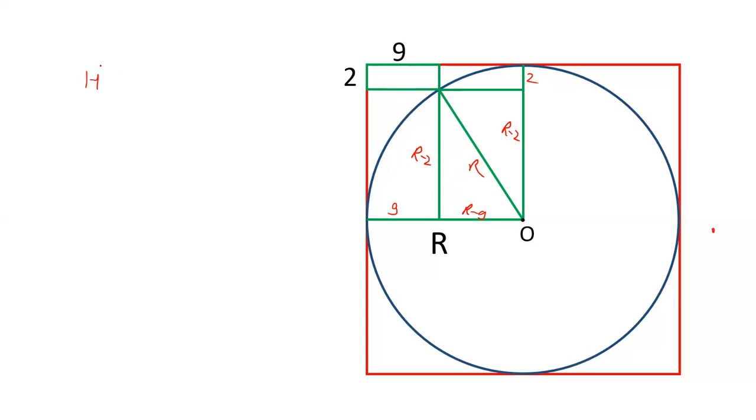Applying Pythagoras theorem, H squared equals P squared plus B squared. H is R, perpendicular is R minus 2, base is R minus 9. R squared equals R squared minus 4R plus 4 plus R squared minus 18R plus 81. R squared cancels out. Negative 22R plus 85 equals zero. And the factors of 85 are 17 and 5.